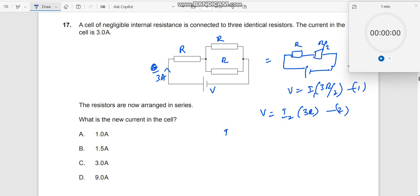I can now say, I1 into 3R by 2 is equal to I2 into 3R, right? So therefore, this 3R and this 3R goes away and I have I1 by 2 is equal to I2.